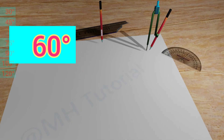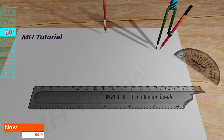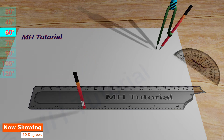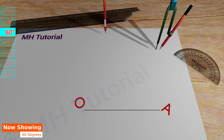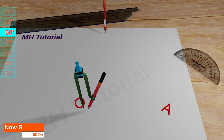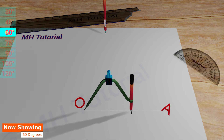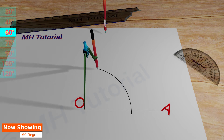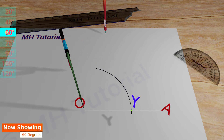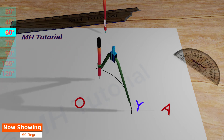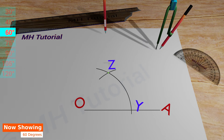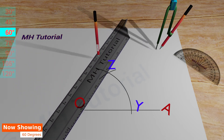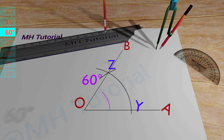60 degrees angle. With a scale and a pencil, a straight line is drawn in the middle of the page. The name of this segment is OA. Next, a pencil compass is taken. A circle arc is drawn with its tip placed at the point O. The arc of the circle intersects the straight line at the point Y. Then, another circle arc of the same radius is drawn with the spike placed at point Y. It intersects the previous arc at the point Z. Then, align the ruler about the point O and the point Z, and draw a line segment between them. This line segment is named OB. Thus, the angle AOB is a 60 degrees angle.